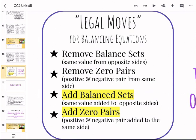The next one was adding balanced sets. So adding the same value to opposite sides. Sometimes this helps us to make some zero pairs that then we can remove and simplify more. And then we can add zero pairs. So a positive and a negative pair added to the same side. So maybe a positive and a negative one added to mat A. So those are some examples.